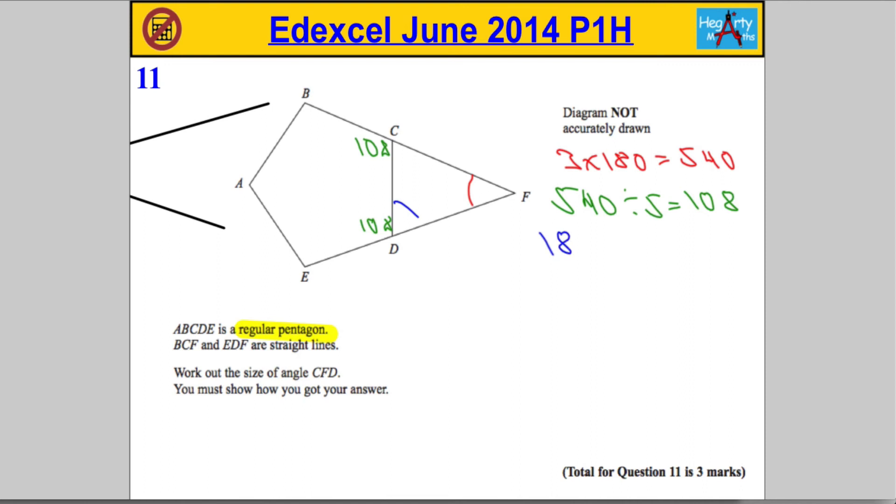So 180 subtract 108 leaves me with 72 degrees. So this angle here is worth 72. So this guy here must also be worth 72.